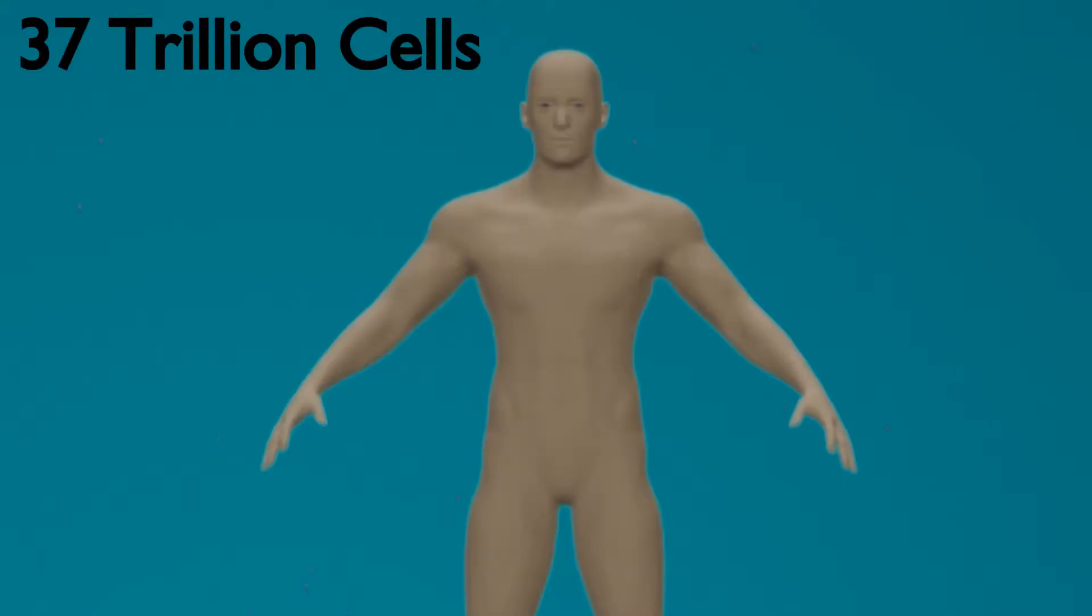In your body, you're made up of about 37 trillion cells, and all of the other creatures that we see with our eyes are going to be made up of somewhere above a trillion cells as well.